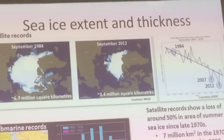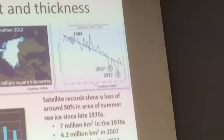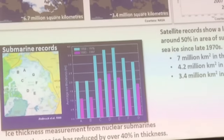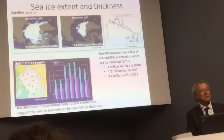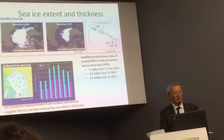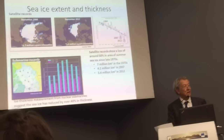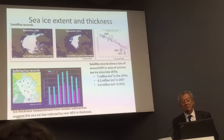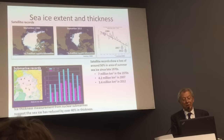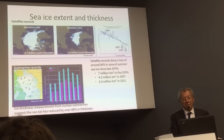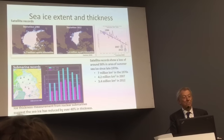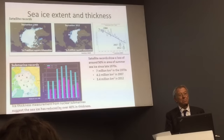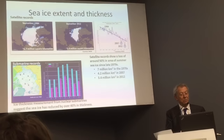Prior to that, submarine records — including work from the Scott Polar Research Institute — had previously shown that the thickness of the sea ice was diminishing even before the satellite data was available. The records are showing a loss of around 50% in the area of summer sea ice since the late 1970s, but the volume of sea ice is falling as well. So the thickness of the remaining ice is considerably smaller than the overall sheet that was there before.